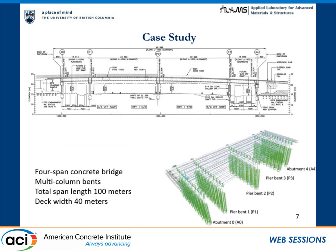This is one of the case studies — a concrete bridge in Vancouver with four spans, supported by multi-column bents and extended piles. The total span length is 100 meters and the deck width is 40 meters. We did the modeling in both SeismoStruct and CSiBridge. When performing the design, we considered P-Y curves, and for response spectral analysis, we iteratively determined the soil springs at different design levels.